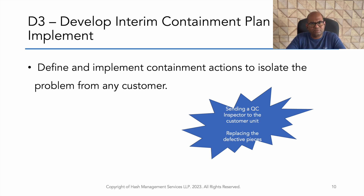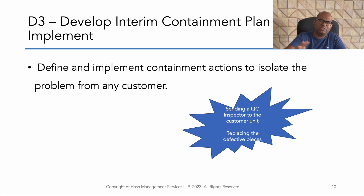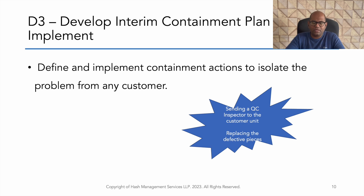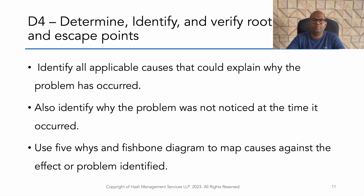D3 is the containment plan. For example, placing a quality inspector to segregate defective parts can be one containment action. If you are finding defects, you can do 100% inspection of the parts. We implement the containment plan to prevent defective products from reaching the customer while we investigate the root cause.